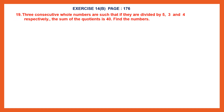Question 19. Three consecutive whole numbers are such that if they are divided by 5, 3 and 4 respectively, the sum of the quotients is 40. Find the numbers.